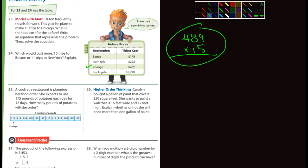Problem 24: Which would cost more, 15 trips to Boston or 11 trips to New York? Let's look at Boston, 15 trips, so that's 178 times 15 and I'll label that Boston. The other one is 11 trips to New York, here's New York, so that's 225 times 11. You'll have to figure out which one costs more.